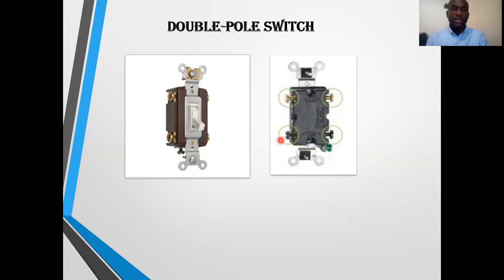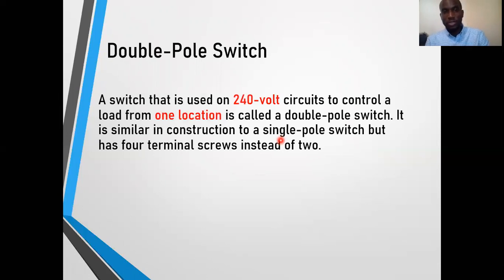Now we have to get into the principle of operation of the double-pole switch. A switch that is used in a 240-volt circuit to control a load from one location is called a double-pole switch. It is similar in construction to a single-pole switch but it has four terminal screws instead of two.